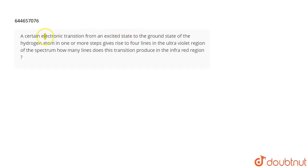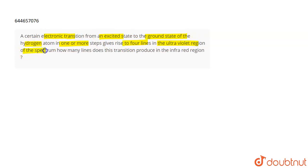The question is: a certain electronic transition from an excited state to the ground state of the hydrogen atom in one or more steps gives rise to four lines in the ultraviolet region of the spectrum. How many lines does this transition produce in the infrared region?